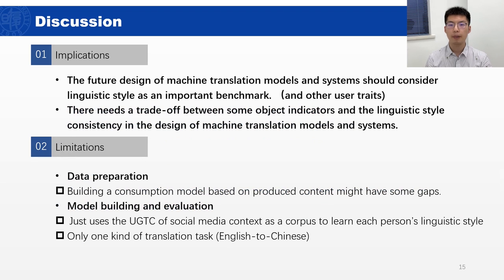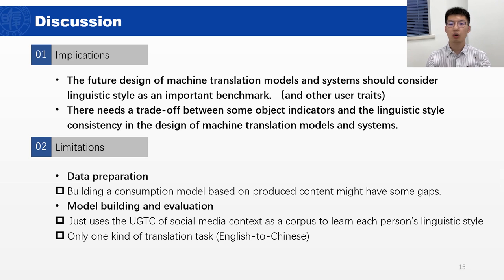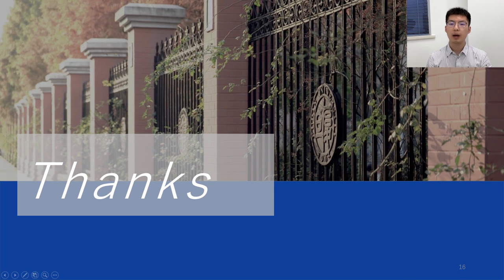Now let's talk about the implications of our work. First, the future design of machine translation models and systems should consider linguistic style as an important benchmark. Second, in our work, we find there is a trade-off between some objective indicators and linguistic style consistency in the design of machine translation models and systems. As an exploratory study focusing on user-oriented personalized machine translation, this research suffers from some limitations in data preparation, model building, and evaluation. Thank you for your interest in our paper, and I would be happy to answer any questions. Thank you.